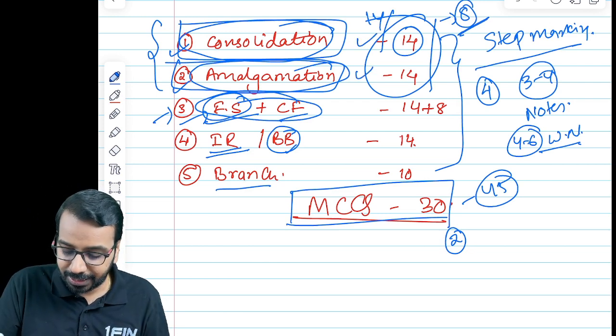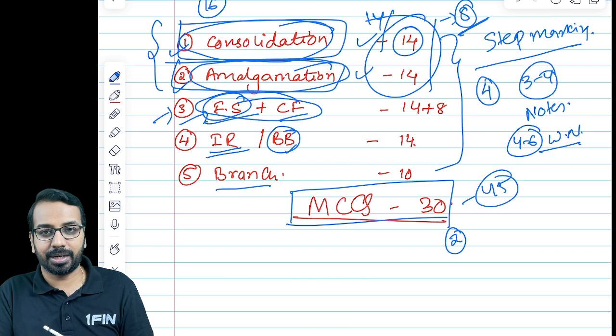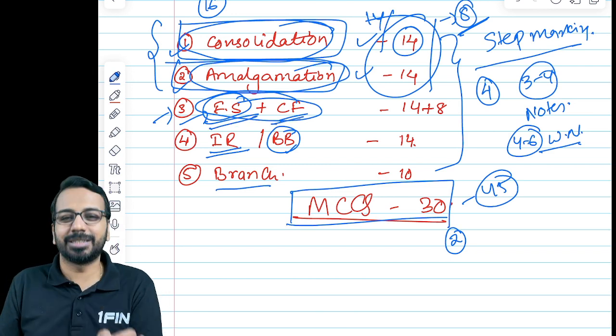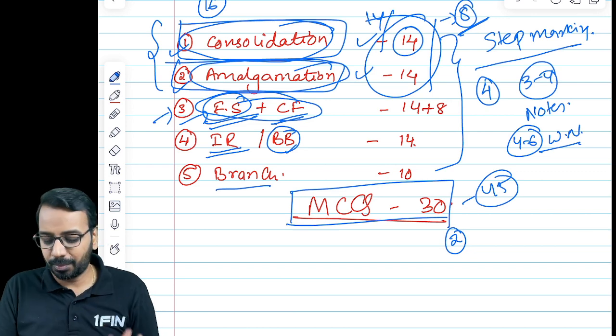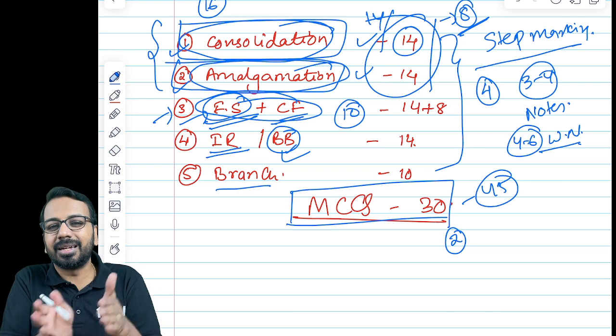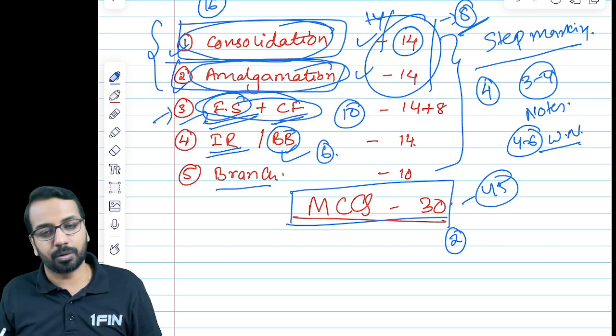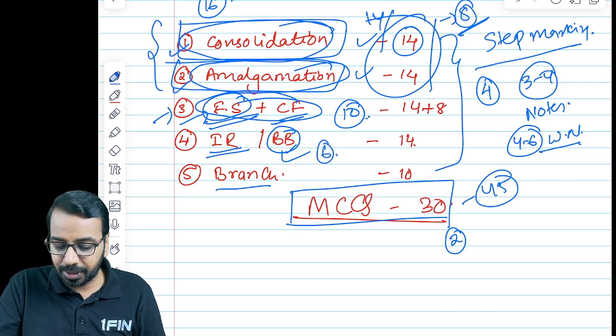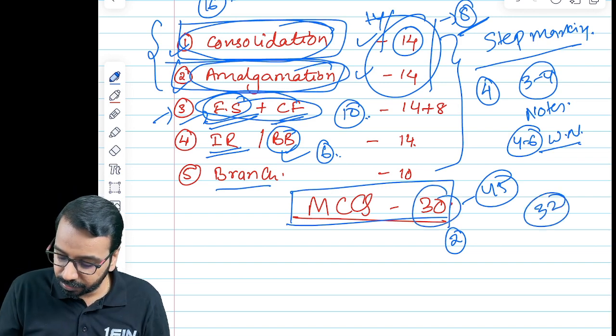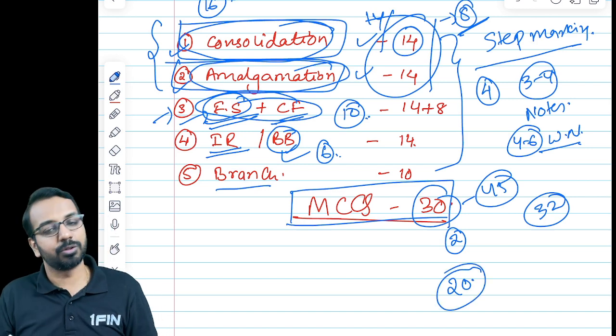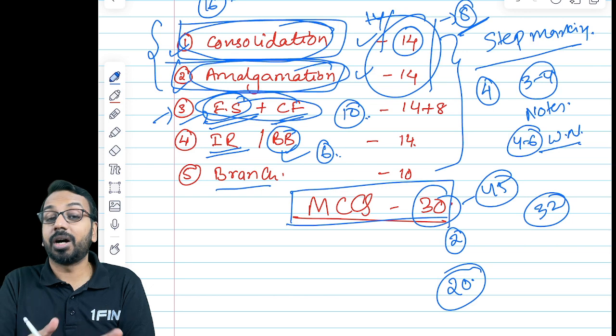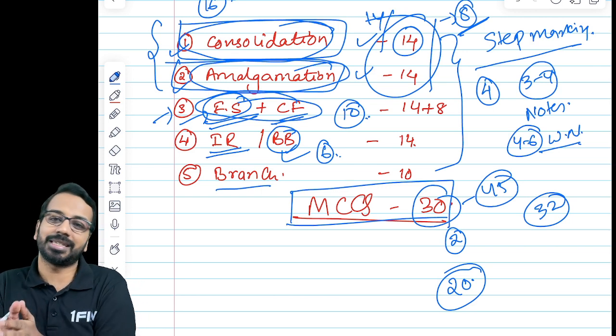So eight here and eight here, this will itself give you some 16 marks advantage. Then in the financial statements, unless it is a very tricky adjustment or you miss out some point, 10 marks is something we can easily target here. Buyback is generally a standard question, we should be able to get about six marks out of this. So 16 plus 10, 26 plus 6, 32 marks we should be able to secure in these questions. Then in MCQs I have been telling you 20 marks at least you should target, and balance accounting standard questions, balance theory questions should give you the additional marks that will help you comfortably reach 60 marks.